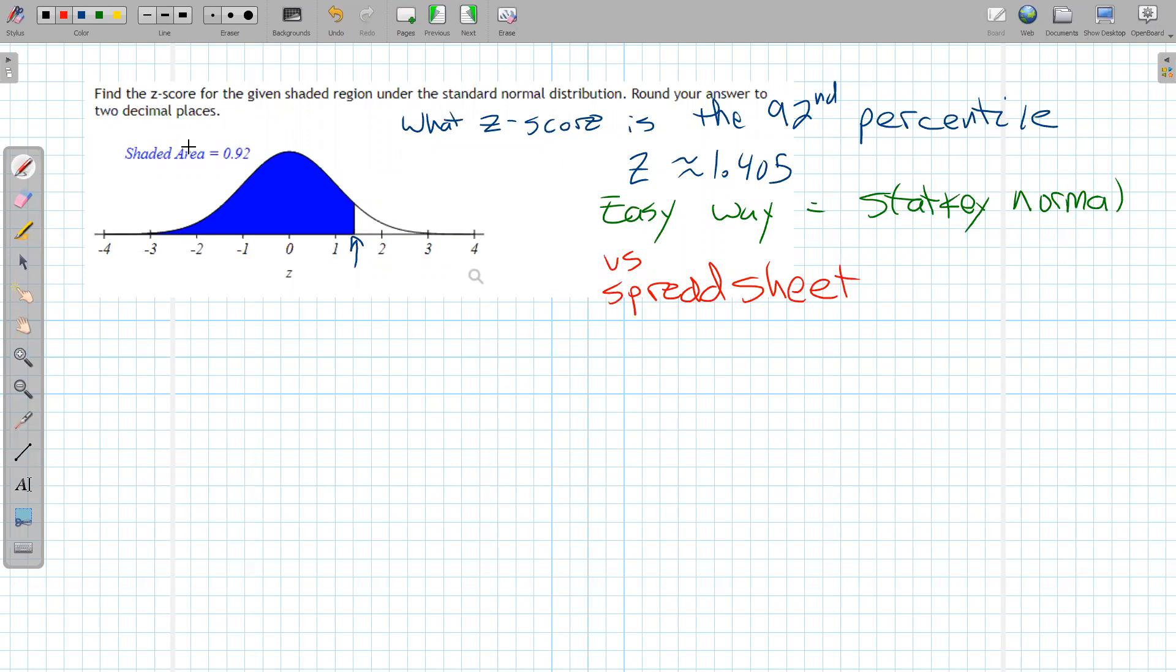And from a probability, the way the spreadsheet works to calculate, in this case, a z-score from the probability, is the norm dot inverse. And then we give the norm dot inverse the left tail probability. Documentation doesn't tell us that, but that's the deal. And then we give it 0 and 1, because we're doing a z-score. That's the mean and standard deviation.